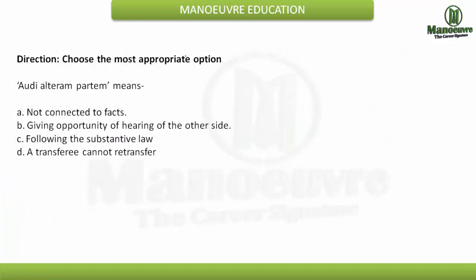Now I will solve a legal maxim question to show you what legal maxims are about and how they are asked. The question: what does 'audi alteram partem' mean? The options are: not connected to the facts; giving opportunity of hearing to the other side; following the substantive law; or a transferee cannot re-transfer. The correct answer is: giving opportunity of hearing to the other side. In our online programs and classroom lectures, we cover which legal maxims are most likely to be asked and how to use the elimination technique to arrive at the correct option.